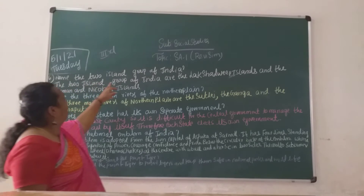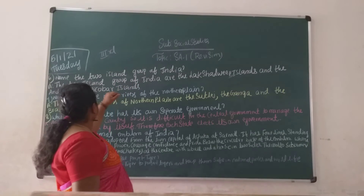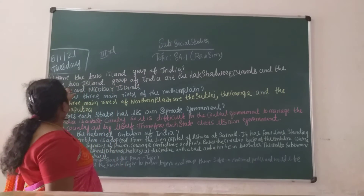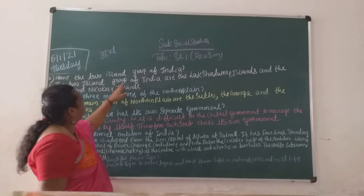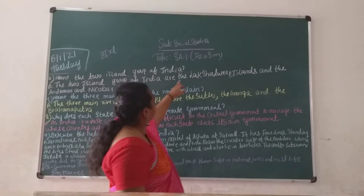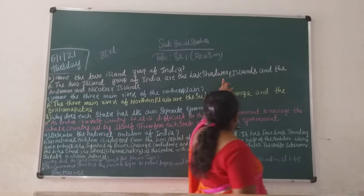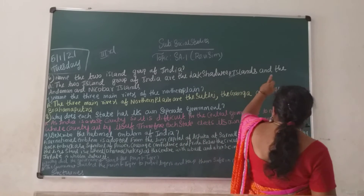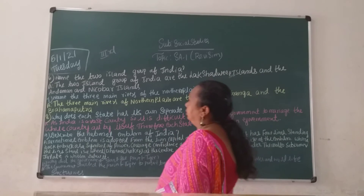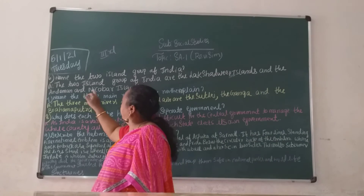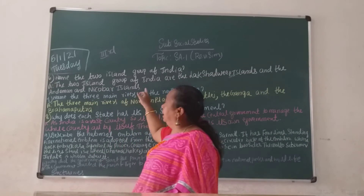Name the two island groups of India. The two island groups of India are the Lakshadweep Islands and the Andaman and Nicobar Islands.